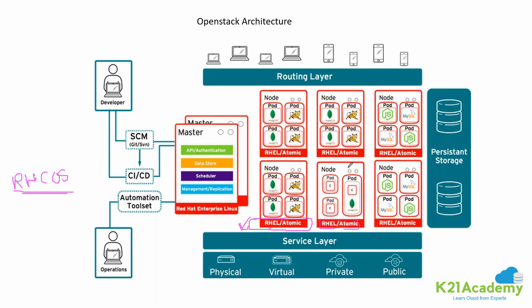This is the data plane where your containers will be hosted, and the master node manages the worker nodes. Similar to Kubernetes, you can deploy it on physical, virtual, private, or public cloud. You have a service layer to expose the application to the outside — like a load balancer service, node port service, or cluster IP service. This is also available inside the OpenShift container platform.